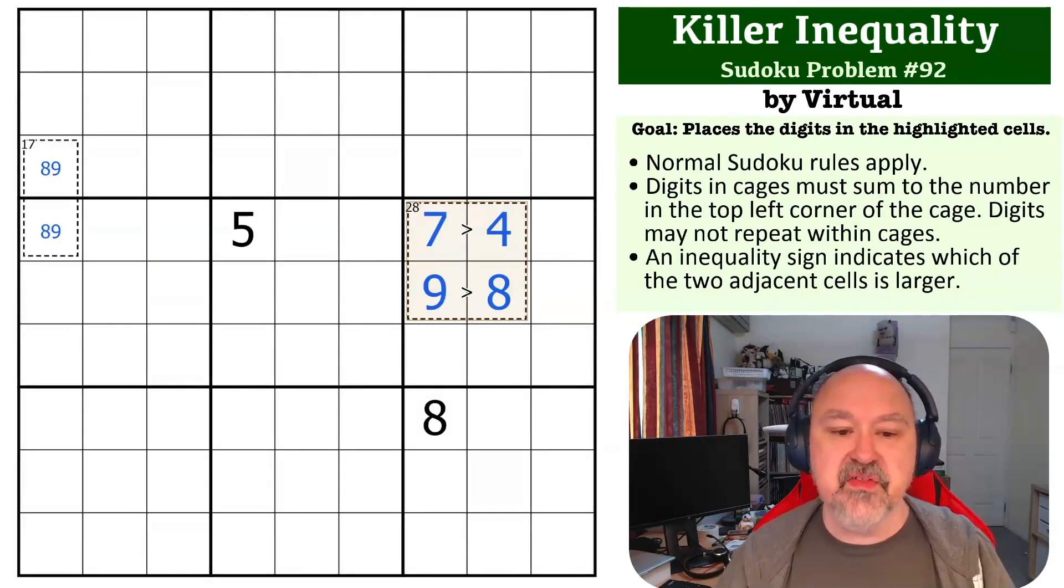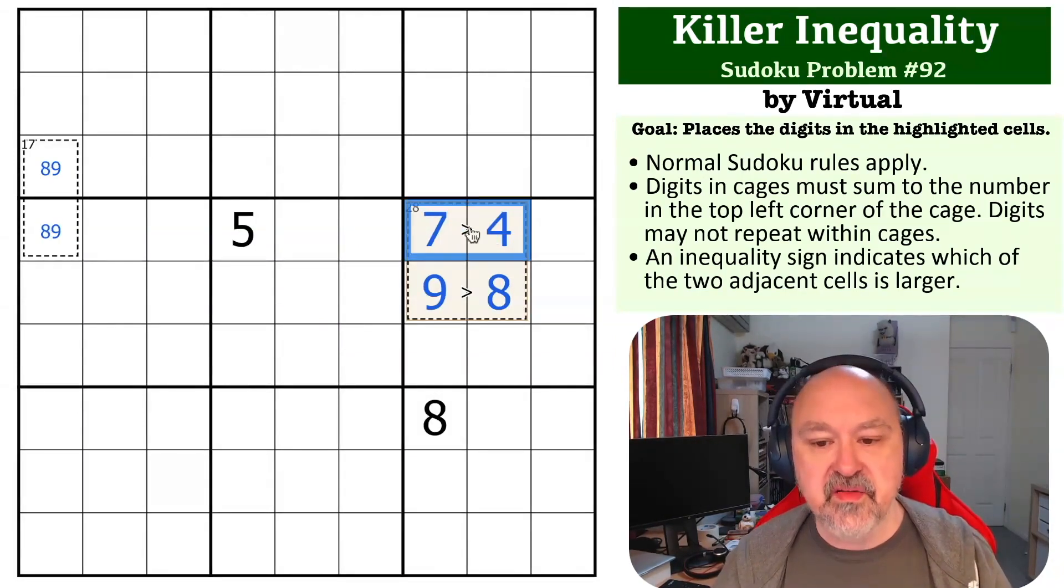I really like the deduction caused by the inequality, the digits being forced, but then the inequality not allowing the 8 to be placed here because the 9 must be greater than it and the 8.